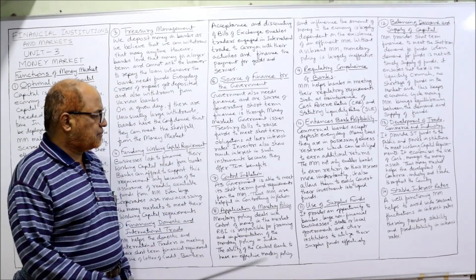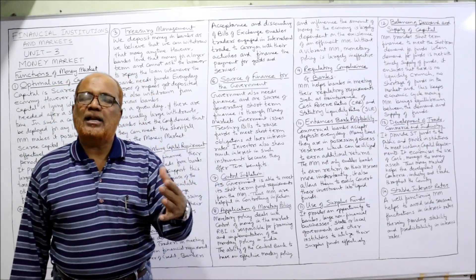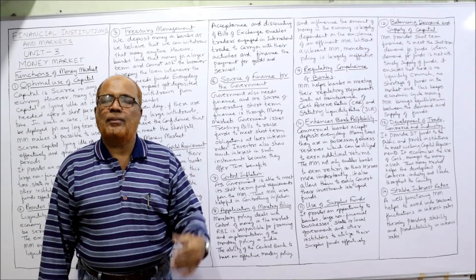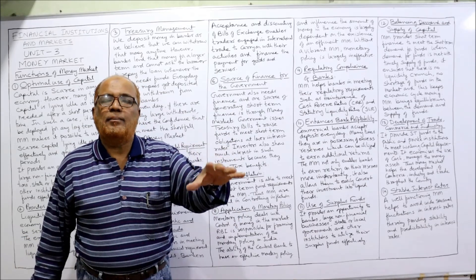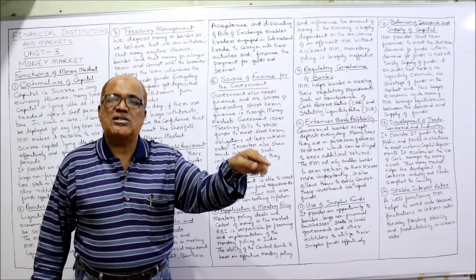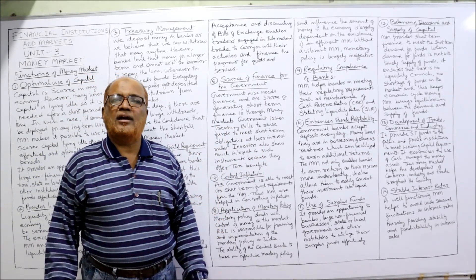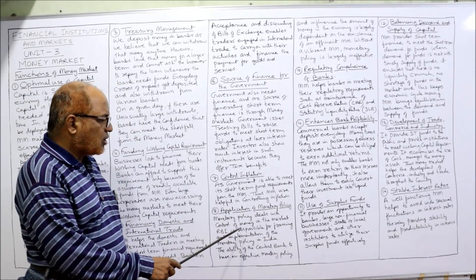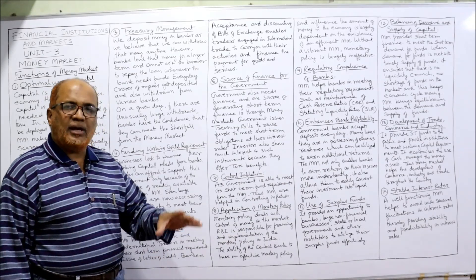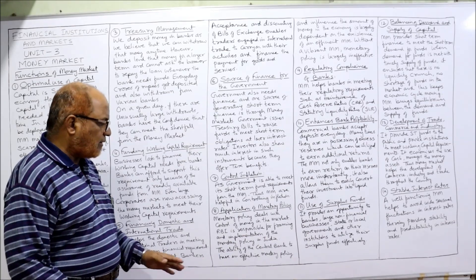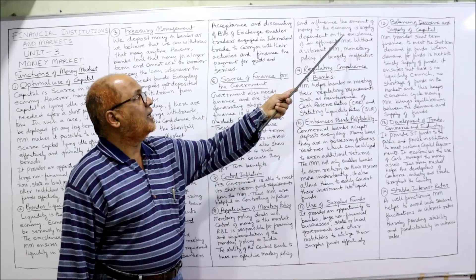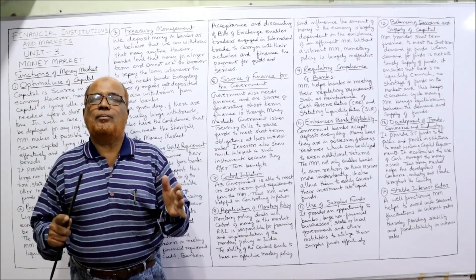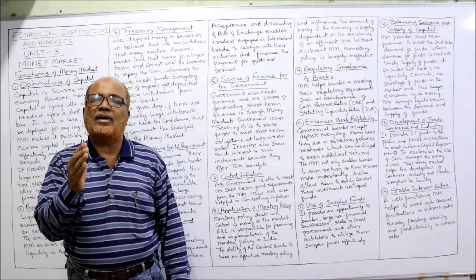The eighth function is the application of monetary policy. Monetary policy is implemented by the central bank — in India the central bank is the RBI. The success of monetary policy depends on how efficiently the money market is functioning. If the money market is perfectly functioning, the objectives of monetary policy will be achieved. The ability of the central bank to effectively control the amount of money in the economy is largely dependent on the existence of an effective money market.